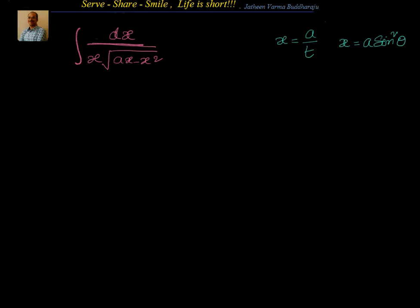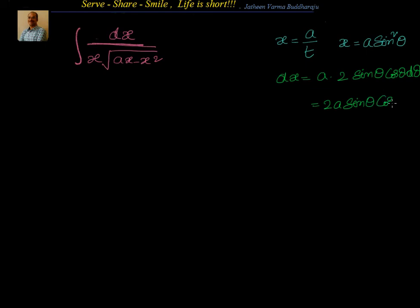So let's start with x equal to a sine square theta. What will be dx? dx equals a into differentiation of sine square theta, which is 2 sine theta cosine theta, d theta. So that's nothing but 2a sine theta cosine theta d theta.